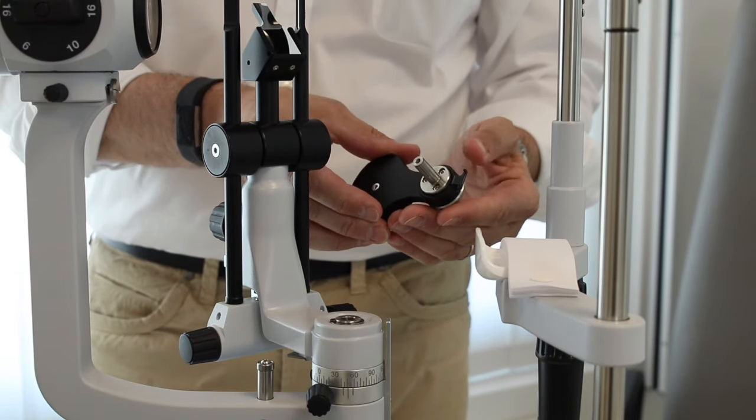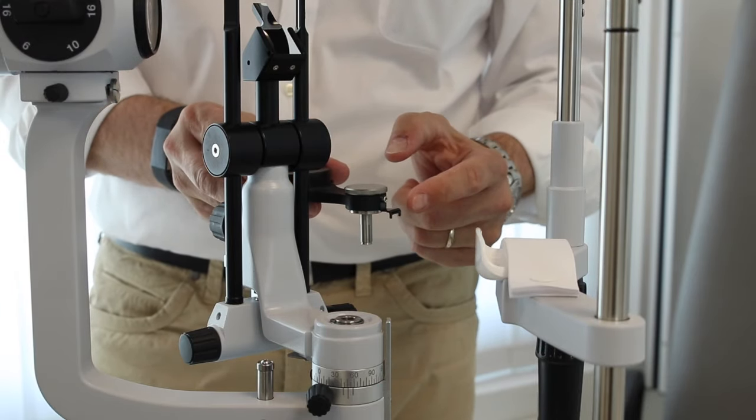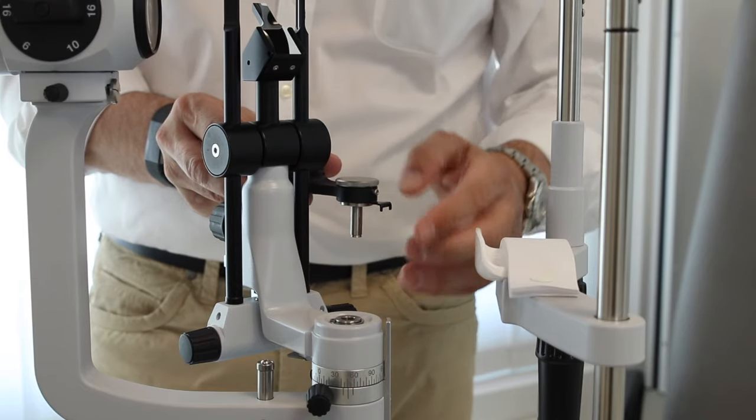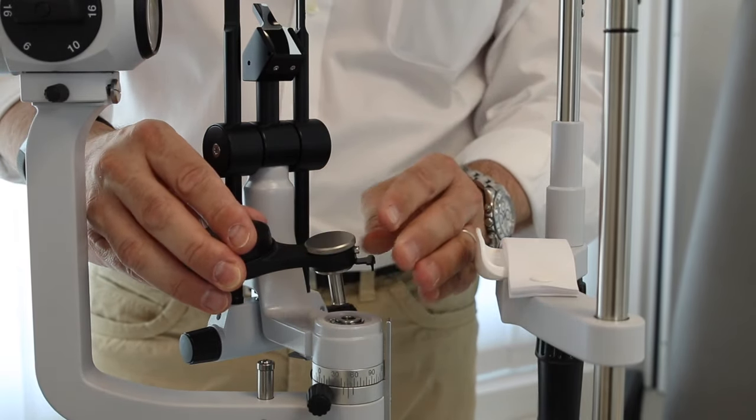Now this is the adapter. This adapter should go in here, and this small element should align there only for Haag-Streit slit lamps. Zeiss slit lamps do not need this.